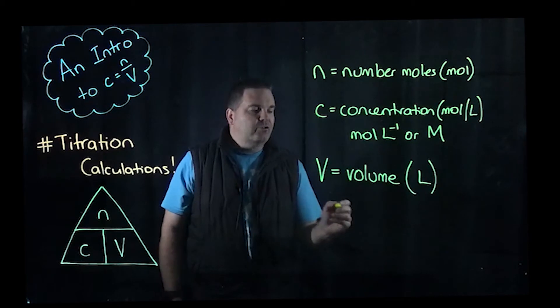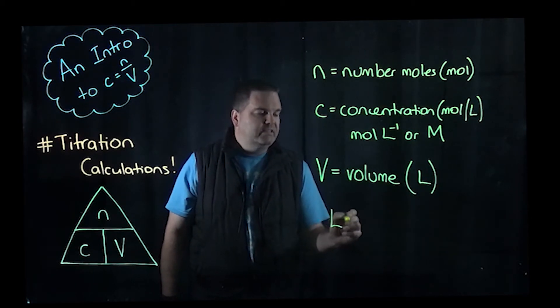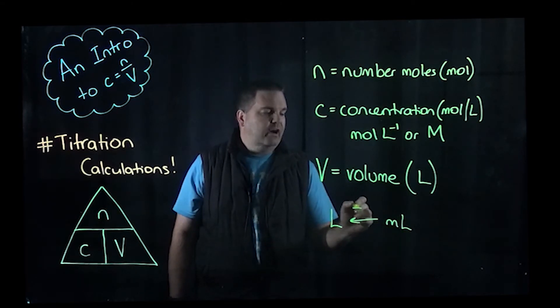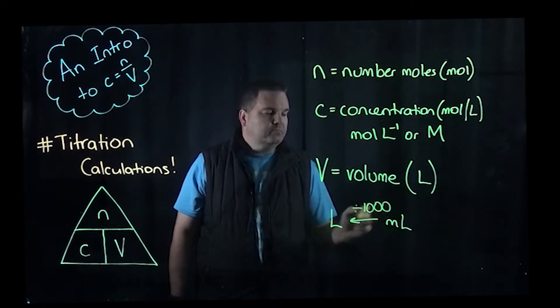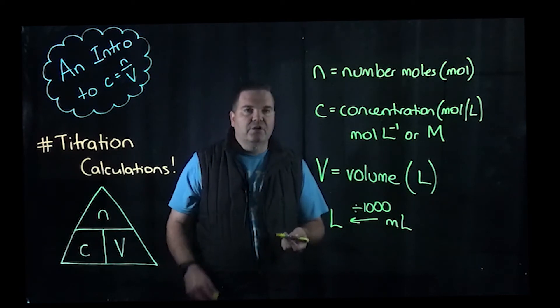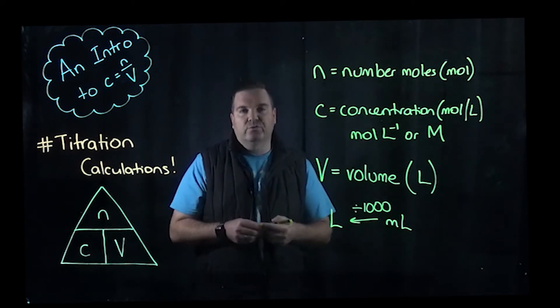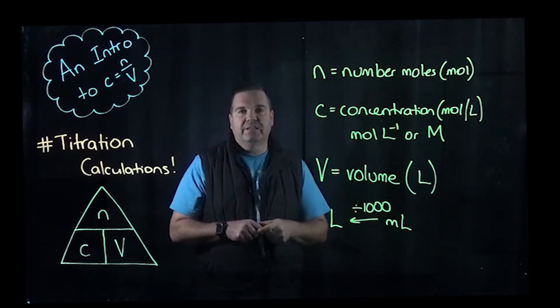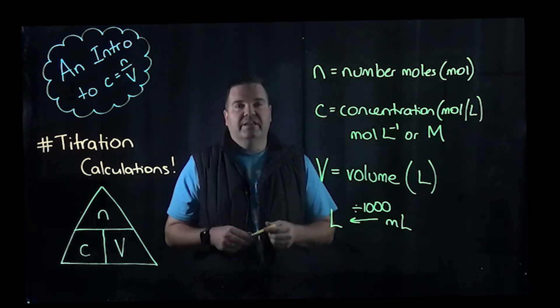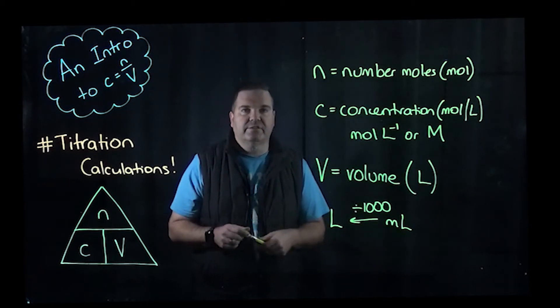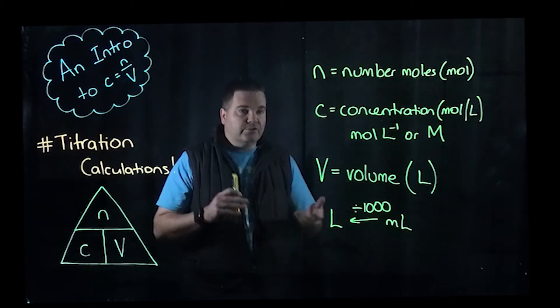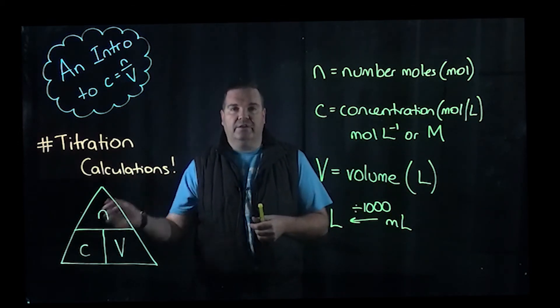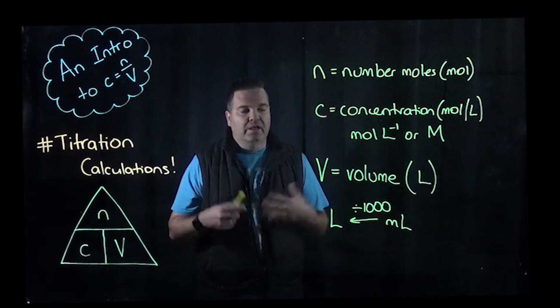You've got to remember that to go from millilitres to litres, you need to divide by a thousand because it's a thousand millilitres in a litre. So if you're doing a titration and you've got a titre reading of 22.6 millilitres, then you need to divide that by a thousand to get into litres before you do any calculations. So let's jump in and I'll show you how to use this triangle. I'll show you how we can calculate number of moles, concentration, and volume.